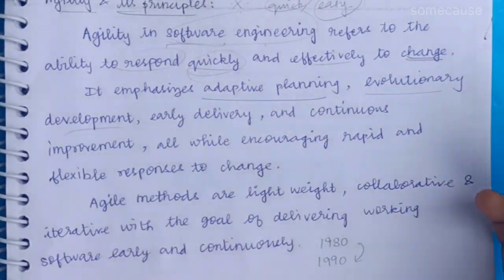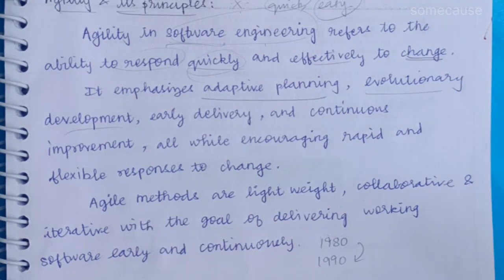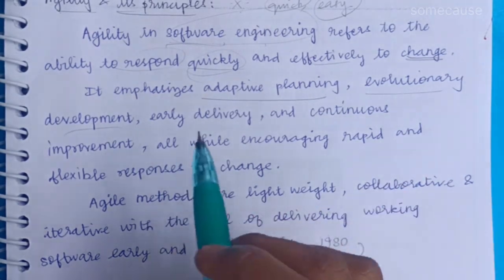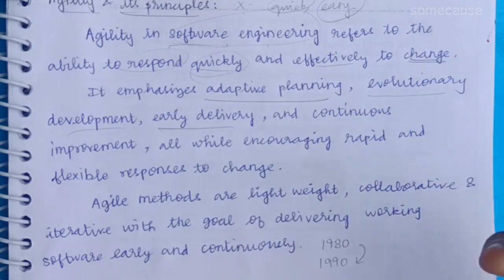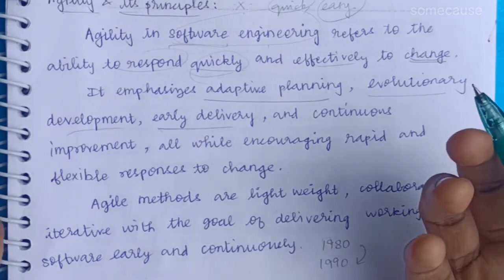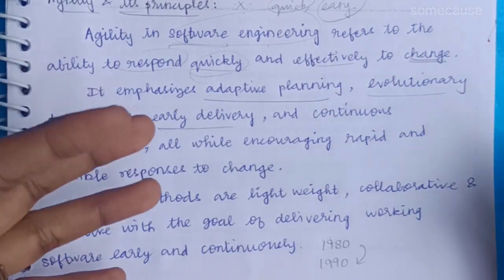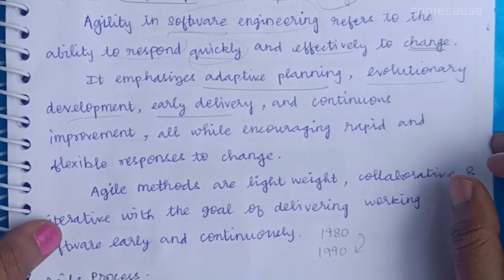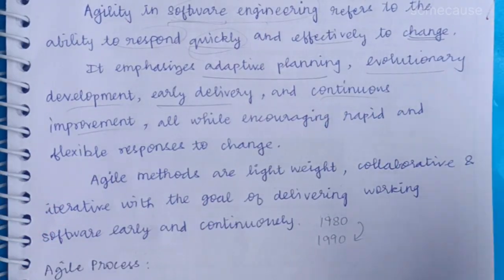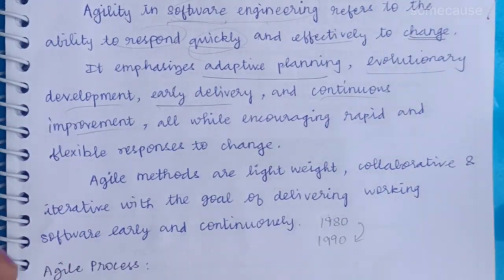Second, evolutionary development. We are going to develop and correct. Plus, early delivery — if we are going to deliver software, we are going to deliver it many times. And continuous improvement — we are going to continue to improve the software.